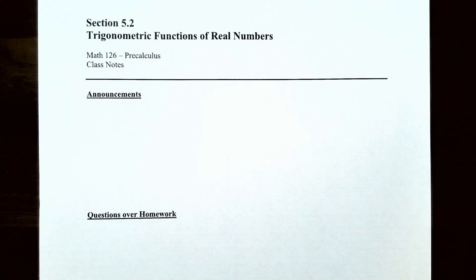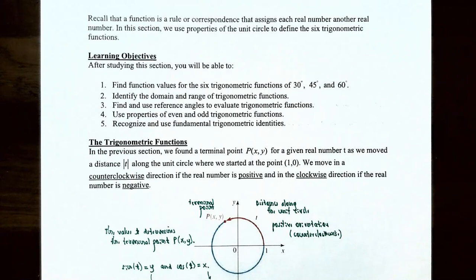Hi everyone, it's Professor Permanent and today we're going to talk about trigonometric functions of real numbers. Recall that a function is a rule or correspondence that assigns each input value another real number or output value, and there is exactly one output value for each input value. In this section we're going to use the properties of the unit circle from the previous video to define the six trigonometric functions.